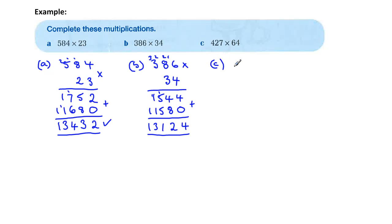And our final one. 427 times 64. We need to know our six tables and our four times tables. So let's start with four. Four sevens, 28. There's my eight. Carry my two. Two fours, 8. Plus two, 10. Carry the one. Four fours are 16. Plus one, 17.